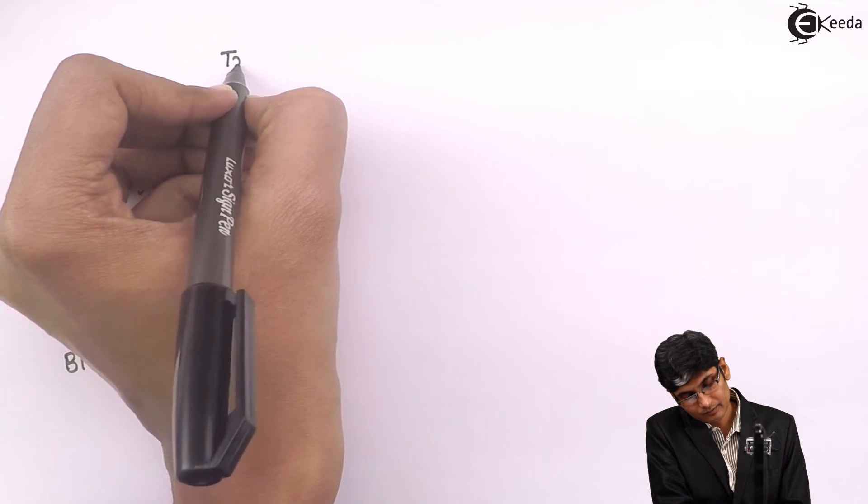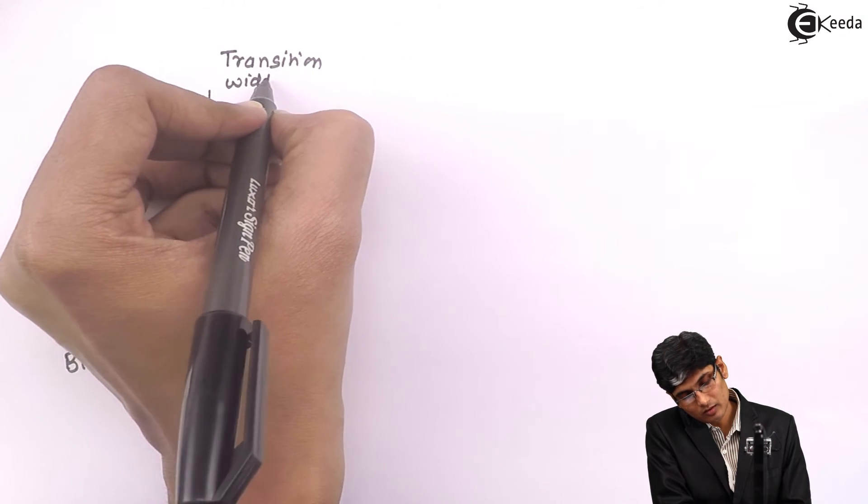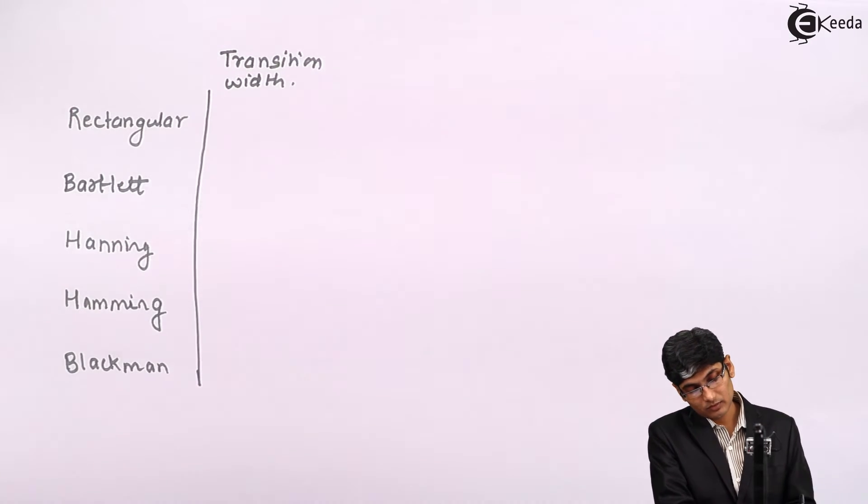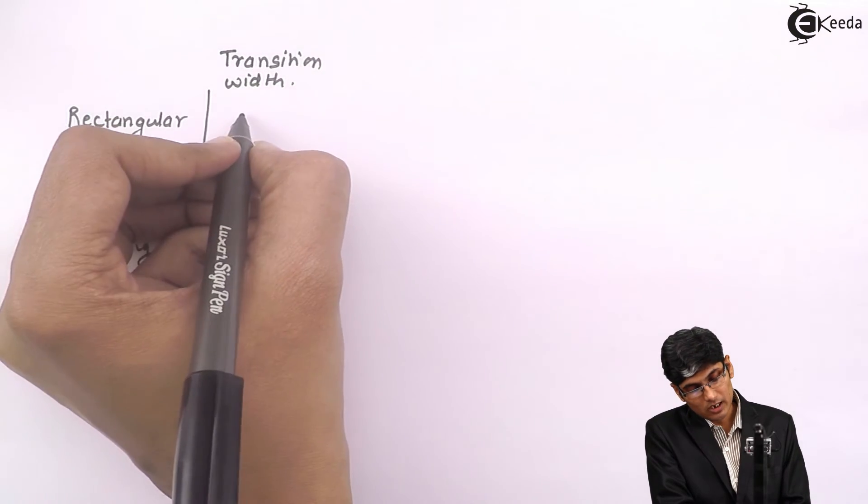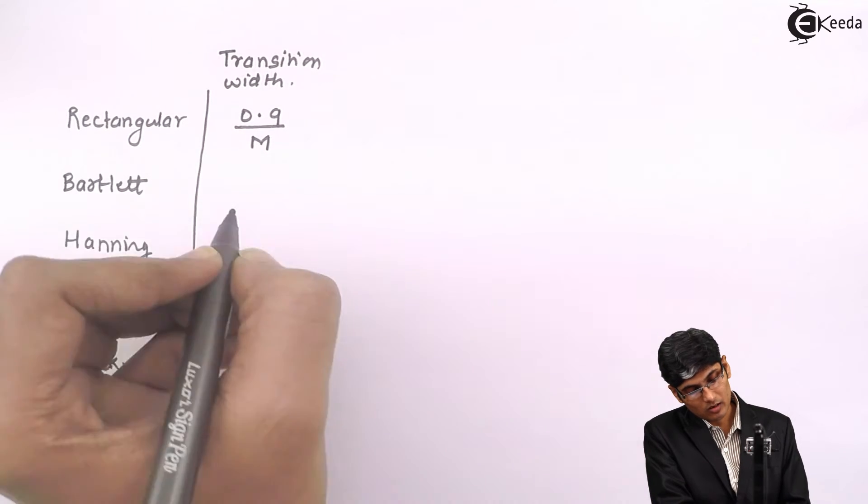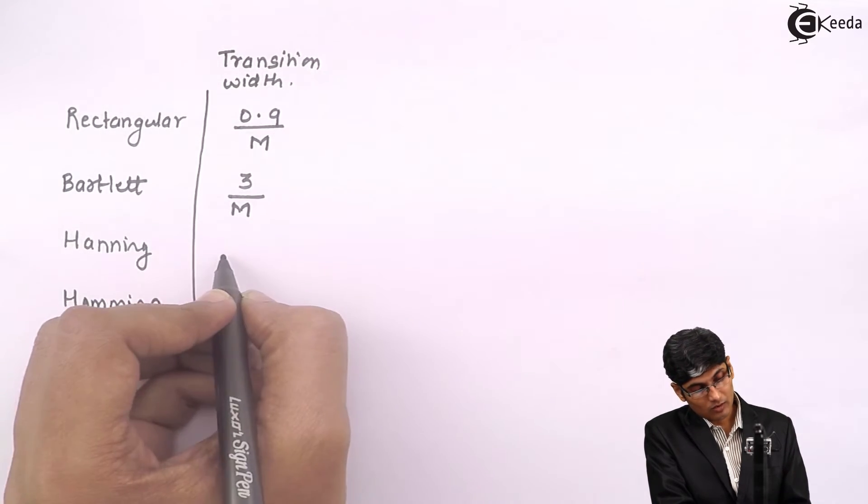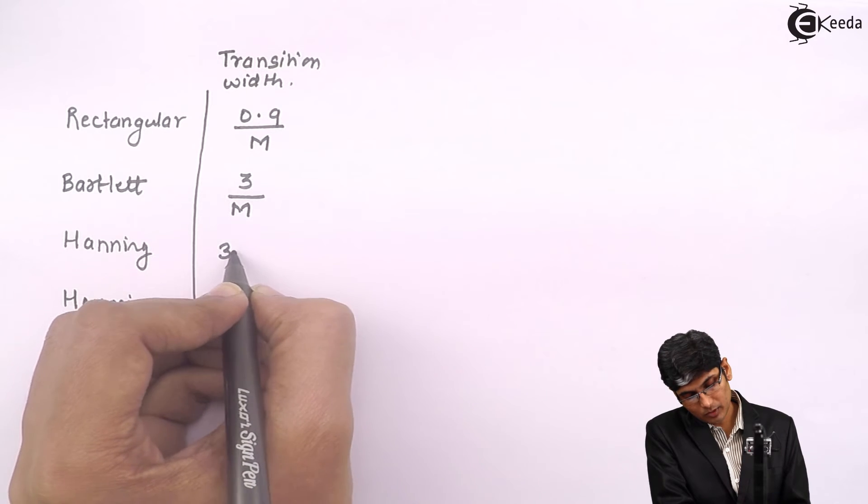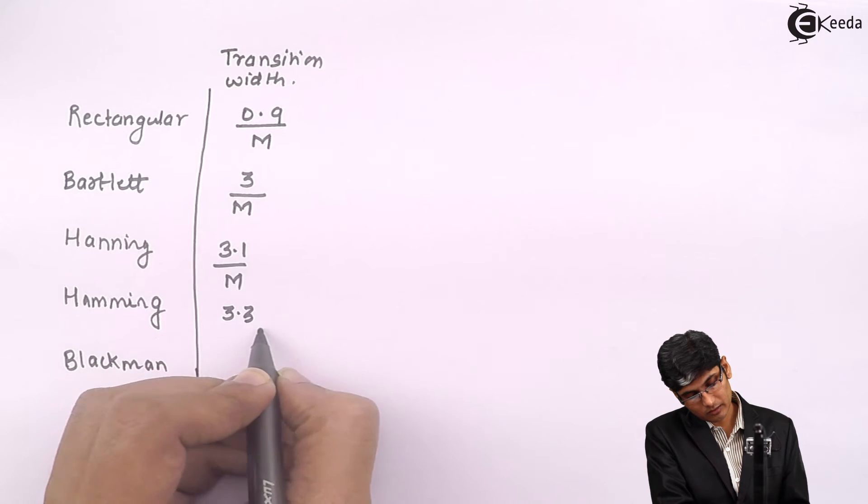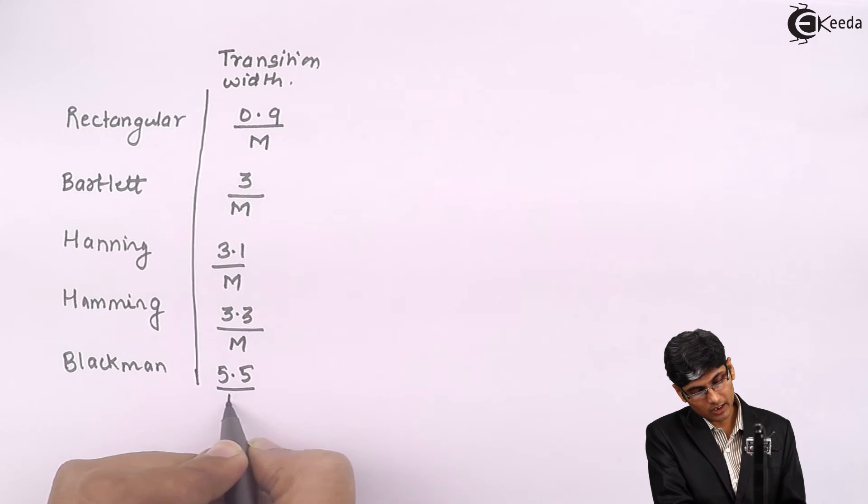Transition width for rectangular window is 0.9/M, for Bartlett it is 3/M, for Hanning it is 3.1/M, for Hamming it is 3.3/M, and Blackman is 5.5/M. That is the transition width of a window.